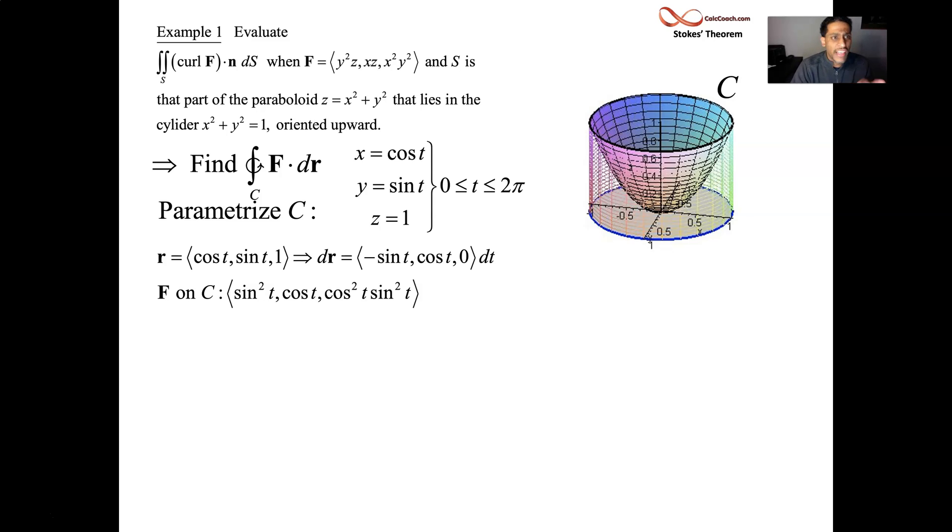We're going to dot F with dr. Not the original F with the x, y, z's in there. We must rip those x, y, z's out and put in the replacements from the curve. We're looking for F where it's restricted just to be on C. Every x should be replaced by a cosine t. Every y should be replaced by a sine t. Every z should be replaced by a one. And so instead of y squared z, we'll have sine squared t. Instead of xz, we just have cosine t. And then instead of x squared, y squared, we'll have cosine squared, sine squared. But we didn't really even care about what was in that last component of F.